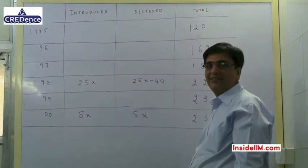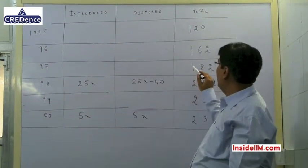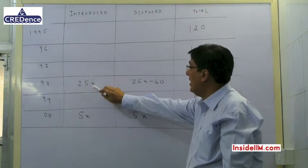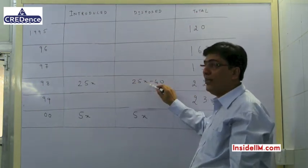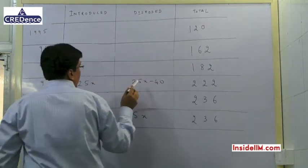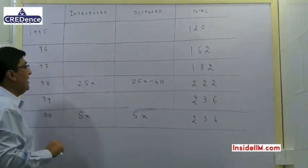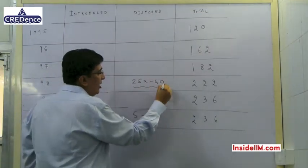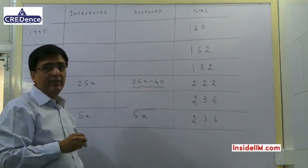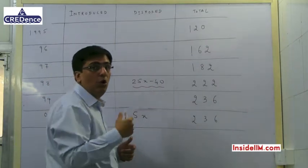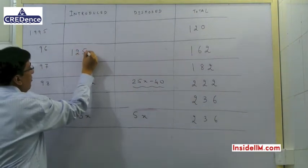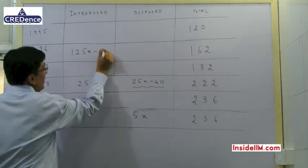In 1997 the total was 182. In 1998, 25x were introduced; for the total to reach 222, the number disposed of in 1998 must be 25x − 40. Examining this equation carefully, x cannot be 0 or 1, because this value would become negative or zero. So x must be 2 or more. Extending back to 1996, the number of Mixture Grinders manufactured in 1996 would have to be 5 times the disposed value, which is 125x − 200.